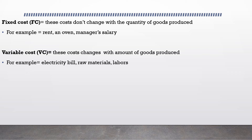Variable costs change with respect to the output produced. For example, if you're producing more cakes, you'll need more raw materials like milk, sugar, and flour, more electricity, and possibly more labor. If you produce more, these costs increase; if you produce less, variable costs decrease as well. Fixed cost plus variable cost equals total cost — this is very simple.